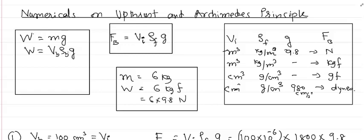The first thing we need to know is weight. Weight is mass of the body into acceleration due to gravity, and mass of the body is volume of the body into density of the body — VB and ρB. So weight W equals VB × ρB × g. We will use this equation frequently when solving problems on upthrust and Archimedes principle.